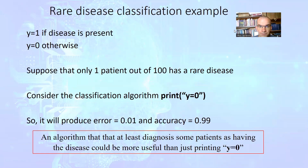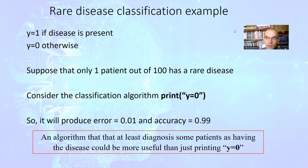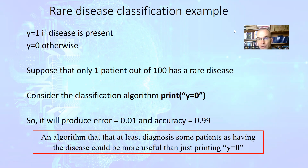Consider an example of a rare disease classification. We have a very rare case when a patient has some disease, and suppose that only one patient out of 100 has this rare disease. We have labels: y equals 1 if disease is present, and y equals 0 otherwise. Consider a very dull classification algorithm which always classifies the data of the patients as having no disease — it just outputs y equal to 0. If we have one patient having disease out of 100, this algorithm will produce an error of 0.01 and accuracy of 0.99. The question arises: is it a good algorithm, even though it produces an error as low as 1%?